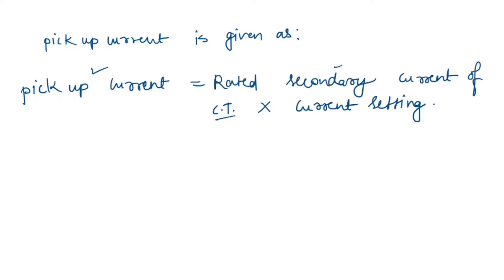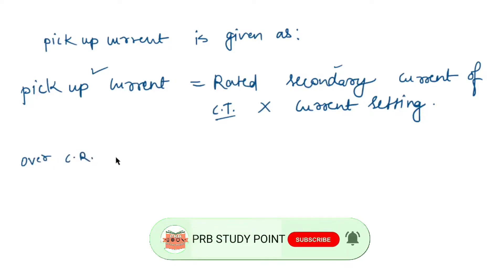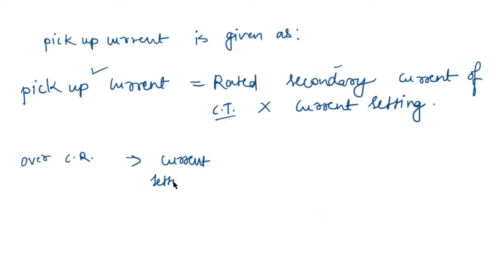For example, consider an over-current relay having a current setting of 130%. It is connected to a supply circuit through a current transformer of ratio 400 to 5.